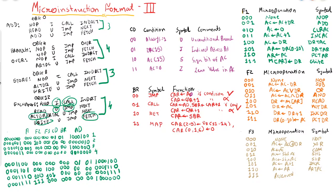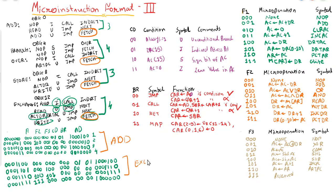Now if you carefully observe, at the end of each instruction there will be a fetch. Once the execution of an instruction is over, fetch will start the next instruction cycle. This is how instructions are stored into the control memory. This is the code for ADD and this is the code for EXCHANGE. Similarly you can convert the remaining instructions into binary format. In the next video we will learn the design of the control unit. Thank you.